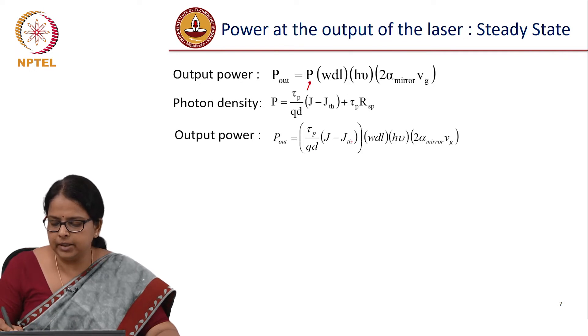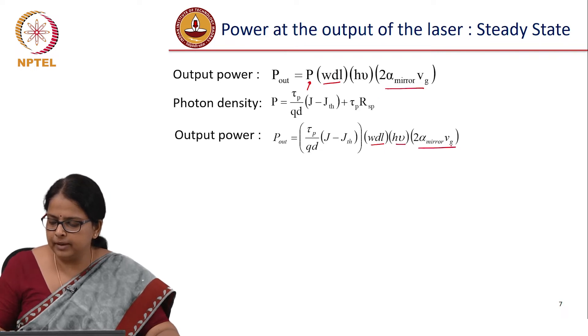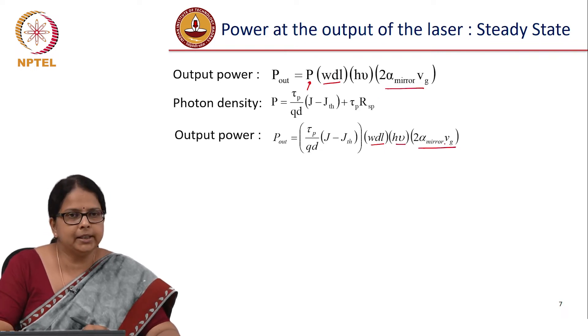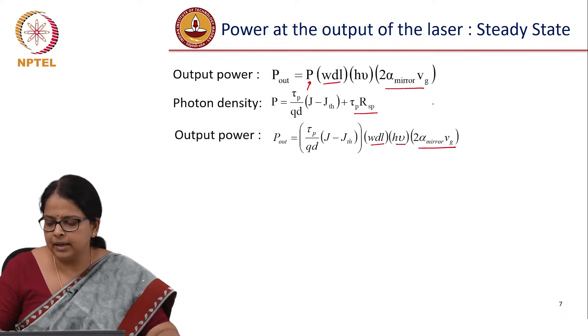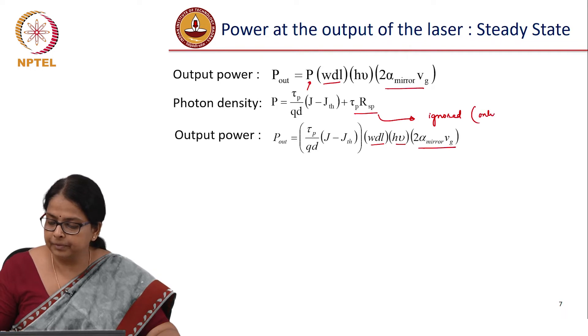So τ_P by Qd (J minus J_th), then there is a WdL—the font looks different, but we represent the same quantities—hν, 2α_mirror V_g. What have I skipped here? I have skipped τ_P R_sp. So this factor is ignored, and you can, you have the right to ignore this only beyond threshold.